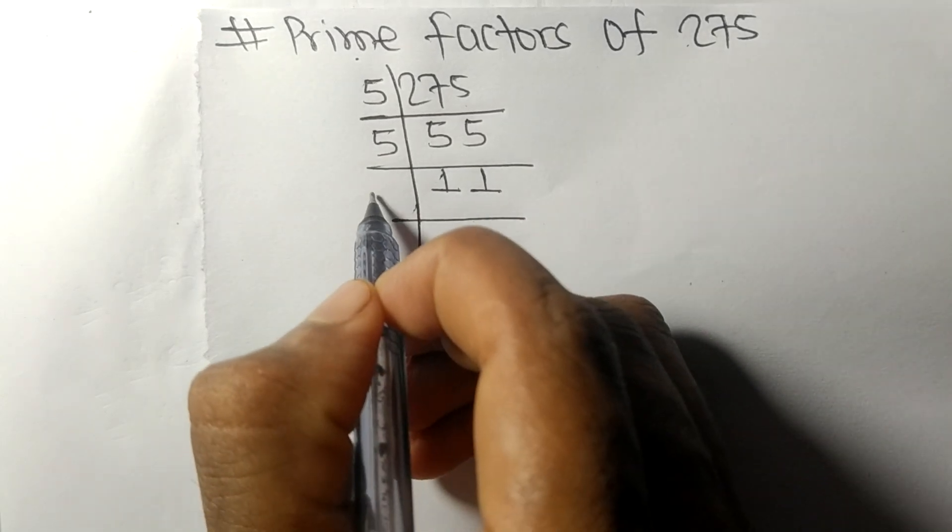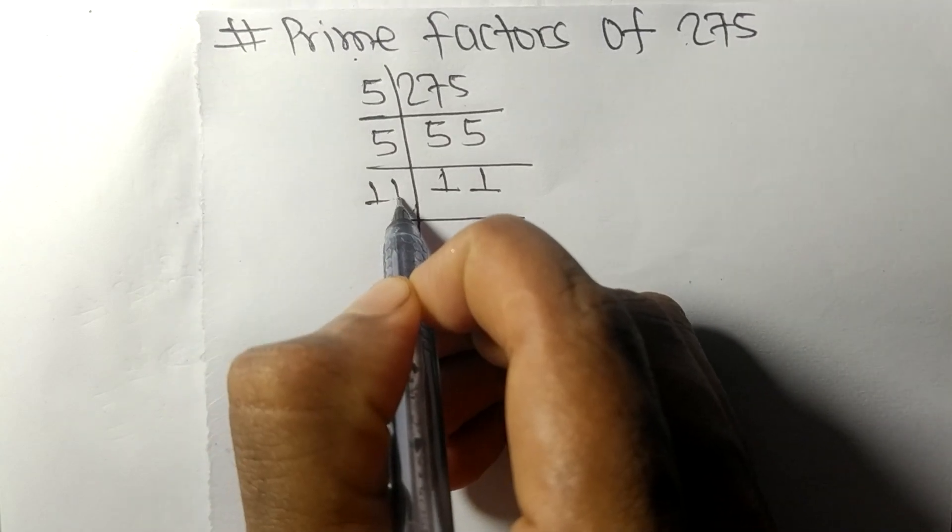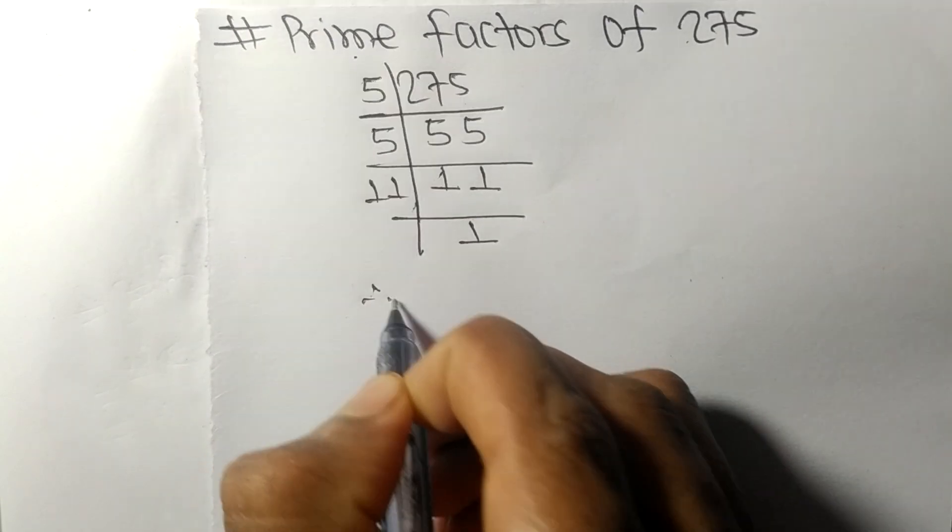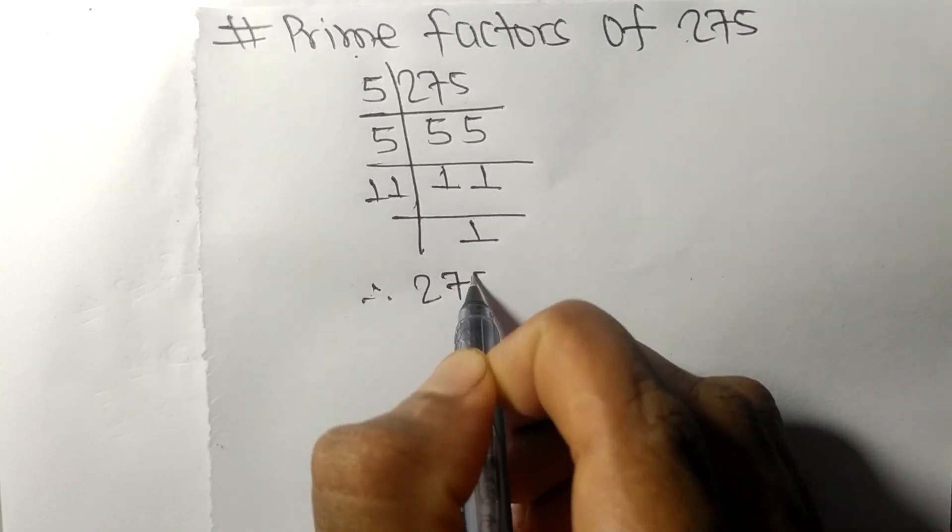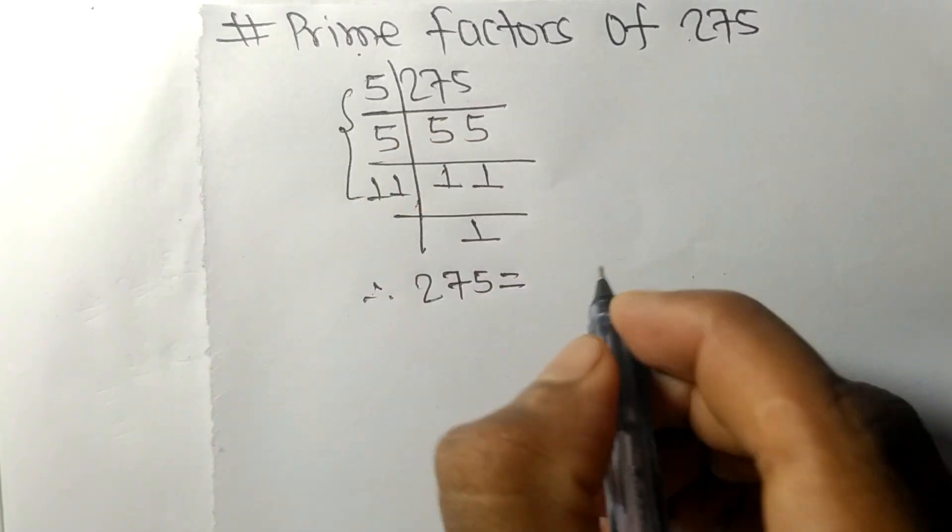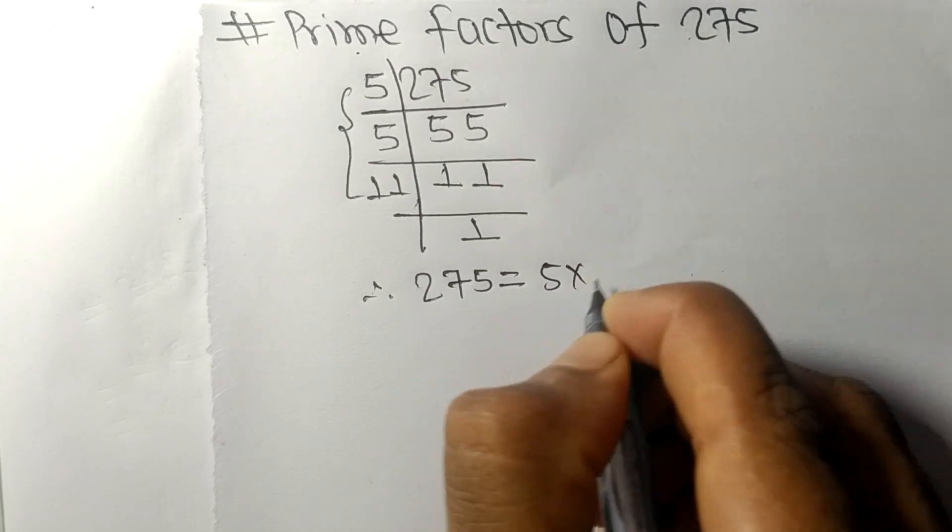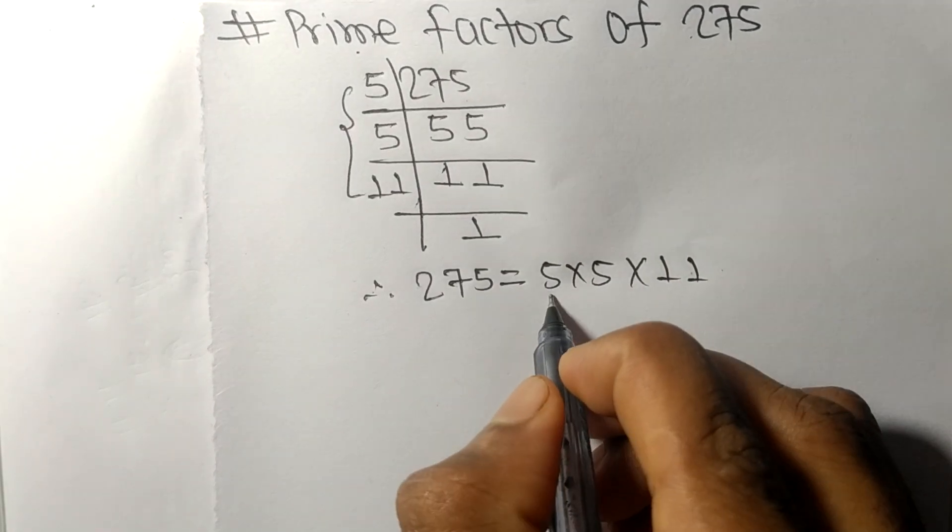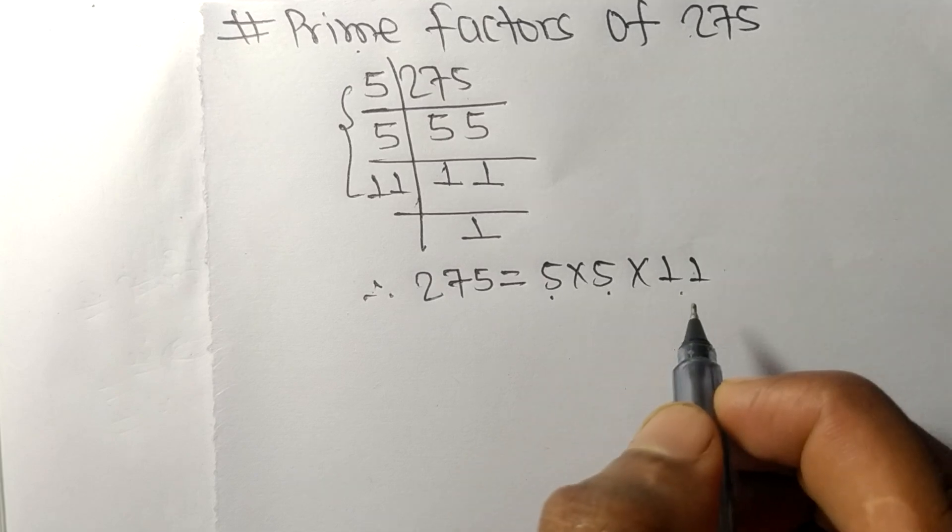11 is divisible by 11 itself and we get 1. Therefore, 275 is equal to 5 times 5 times 11. So 5, 5, and 11 are the prime factors of 275.